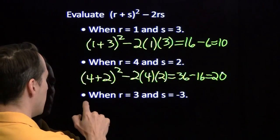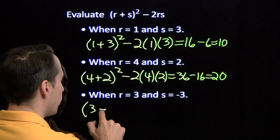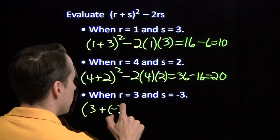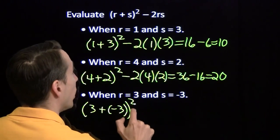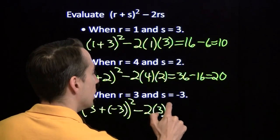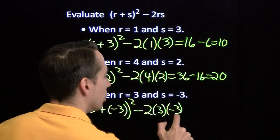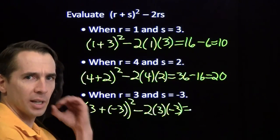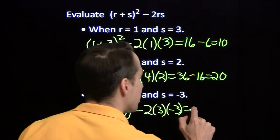All right, one more time. We have 3 plus, now we're putting in a negative 3 for S. Negative 3 squared minus 2 times 3 times negative 3. All right? 3 plus a negative 3. That's 0. 0 squared is still 0.